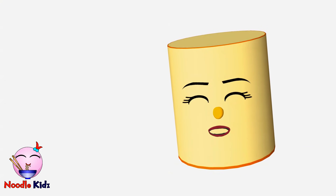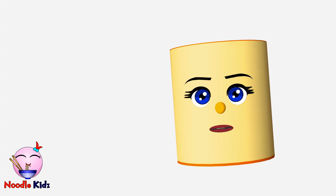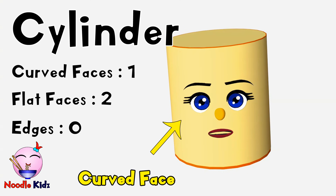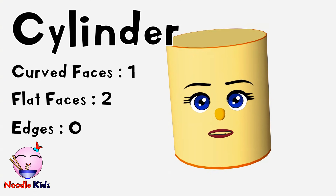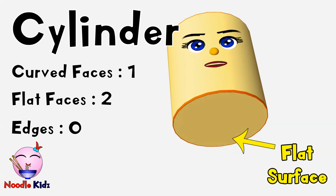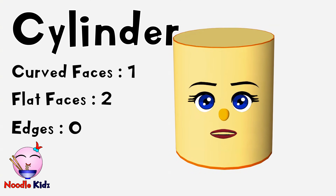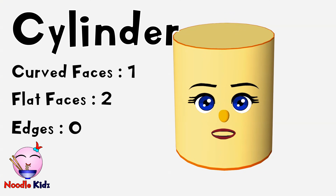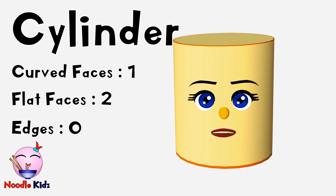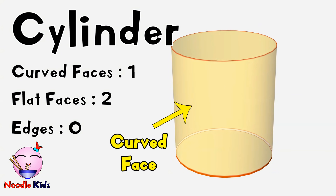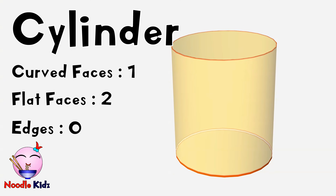I'm next. Do you remember my name? I am a cylinder. I have one curved face, and I have one, two flat surfaces. I don't have any edges, which means I also don't have any vertices. So a cylinder has one curved face, two flat surfaces, and zero edges.